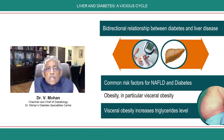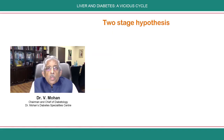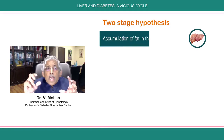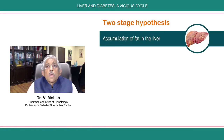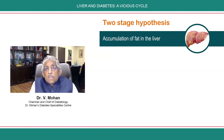In the pathogenesis of non-alcoholic fatty liver disease, they talk about a two-hit hypothesis or a two-stage hypothesis. The first stage is just accumulation of fat inside the liver — the triglycerides go and settle down as hepatic triglycerides. That is the first step.